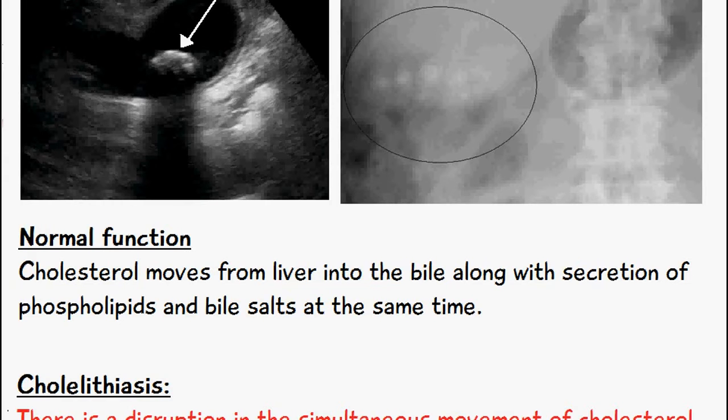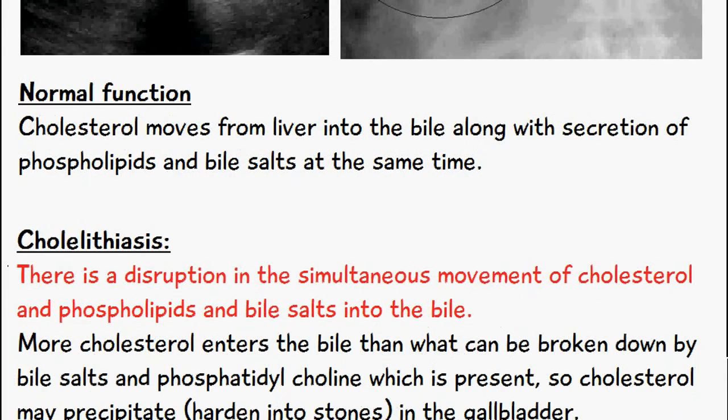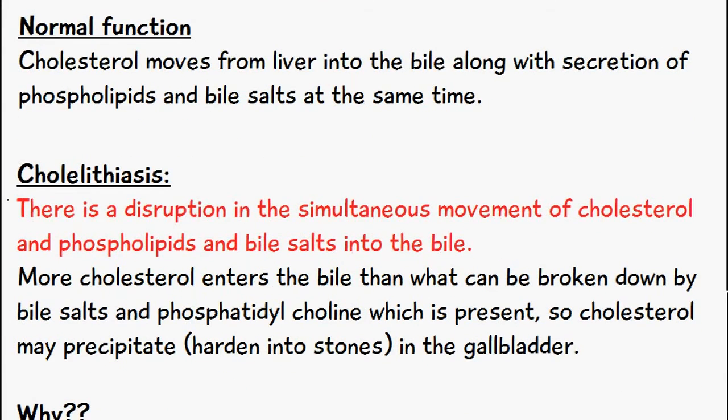In cases of cholelithiasis or gallstones, there's a disruption in the simultaneous movement of the cholesterol, phospholipids, and bile salts into the bile. Remember, the process must be simultaneous — cholesterol should move from the liver into the bile at the same time as the bile salts and phospholipids.